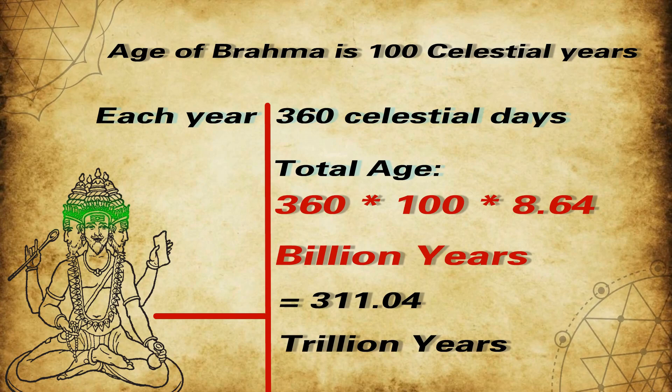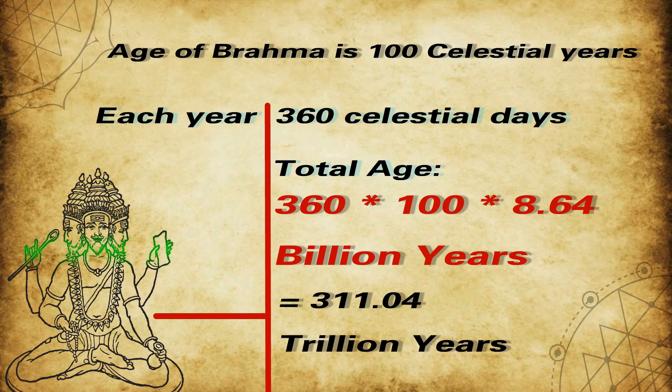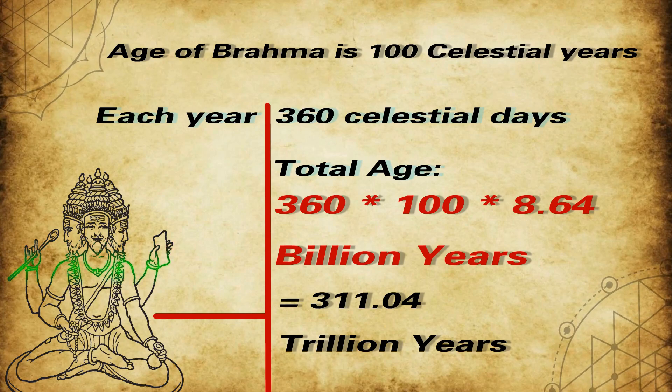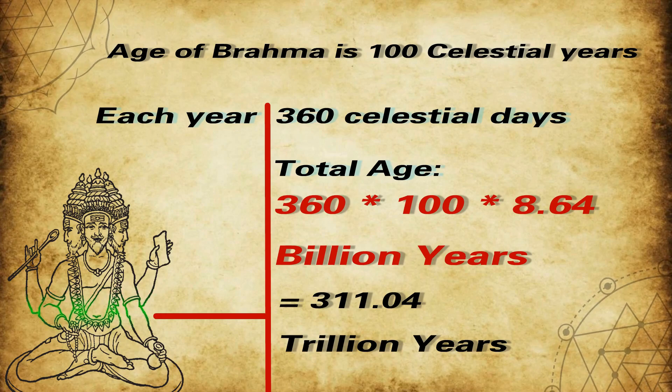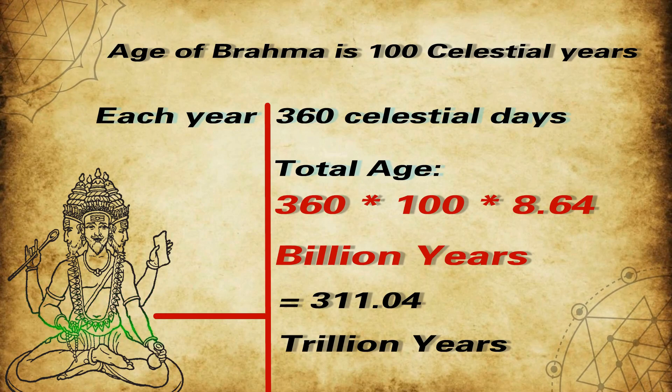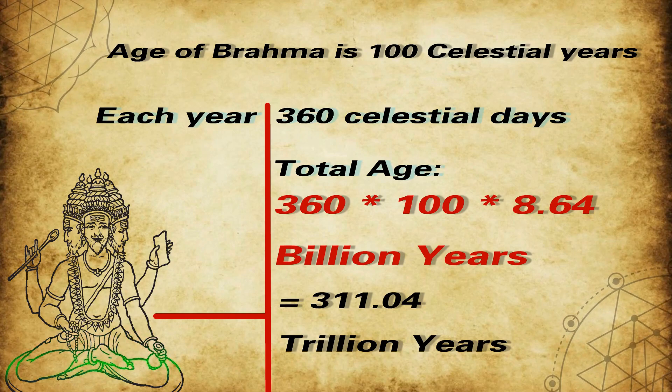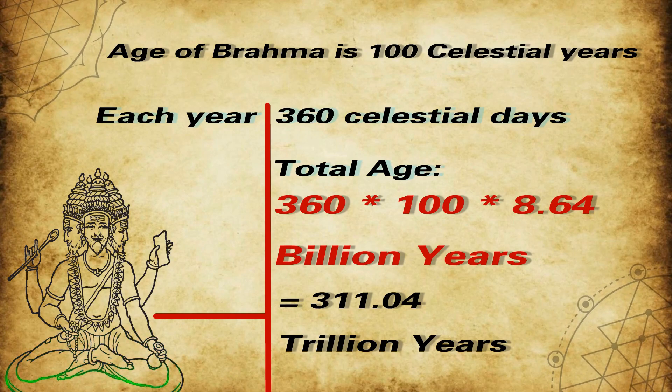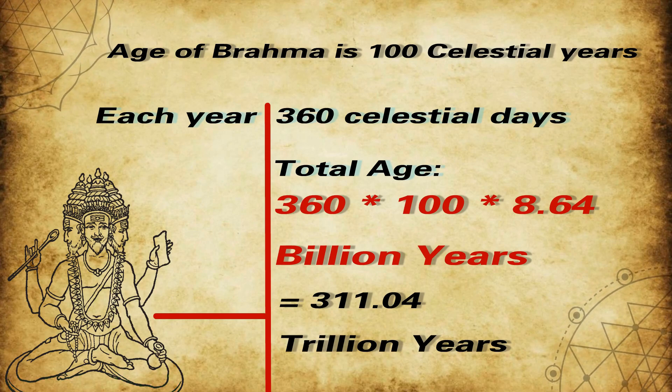The age of Brahma is 100 celestial years. Each year of Brahma has 360 celestial days. And the total age of Brahma is 360 multiplied by 100 multiplied by 8.64 billion years, that is 311.04 trillion years. This period is called Mahakalpa.